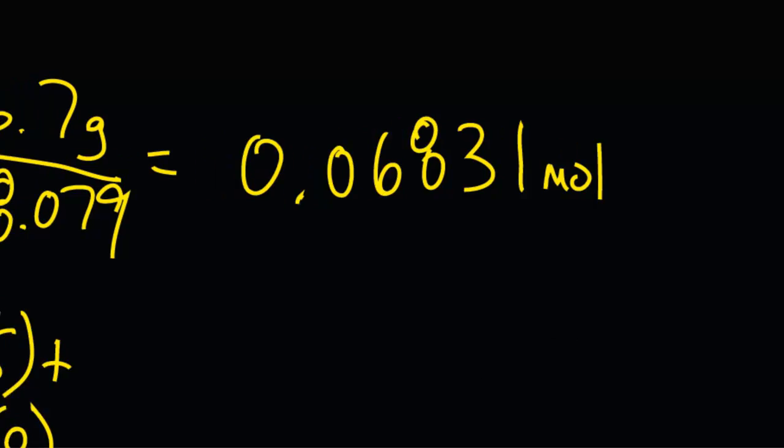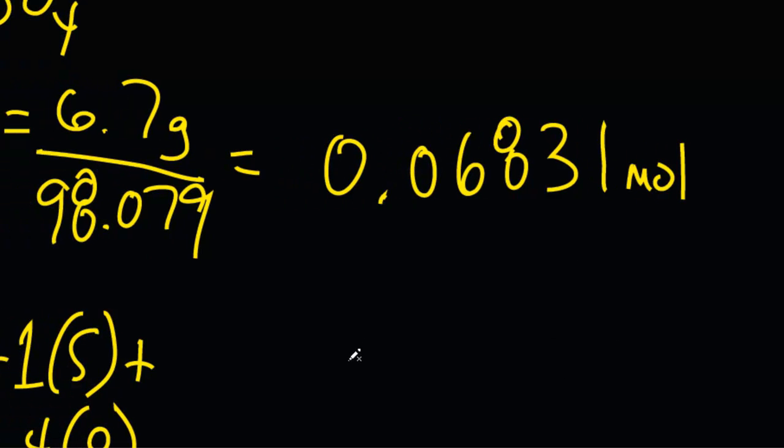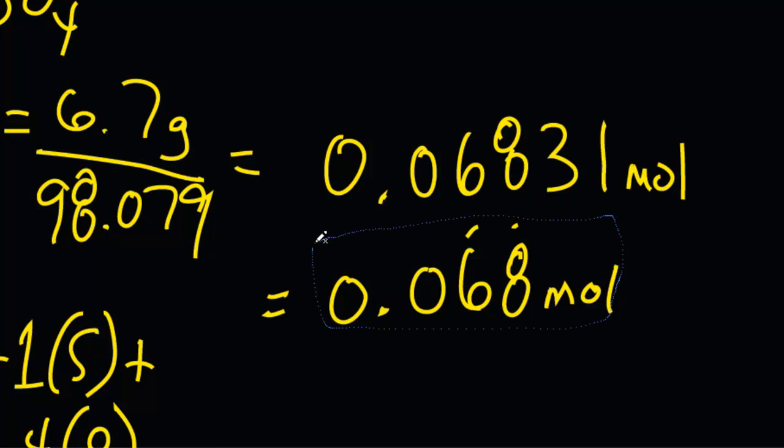0.06831 mole. But remember, this guy measured only 6.7 grams, and his measuring device only went 2 significant figures. Which means that to report the actual number of moles, the only thing that we can be certain about is that we have 0.068 mole, 2 significant figures here. Here's our answer.